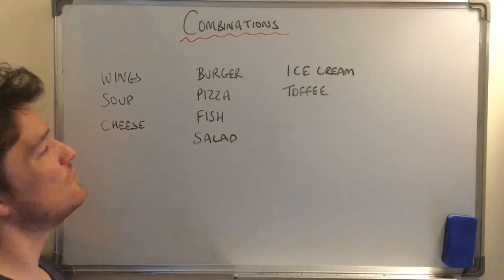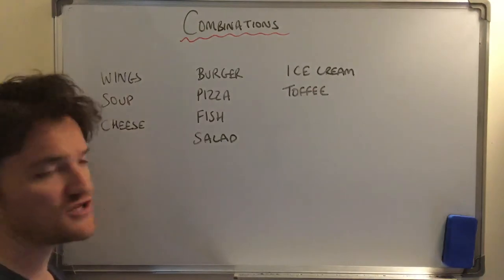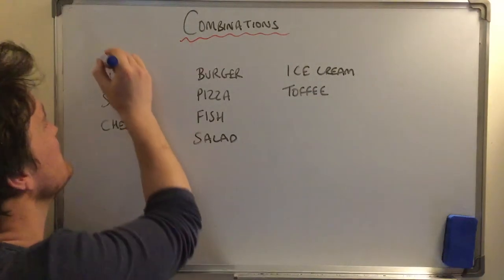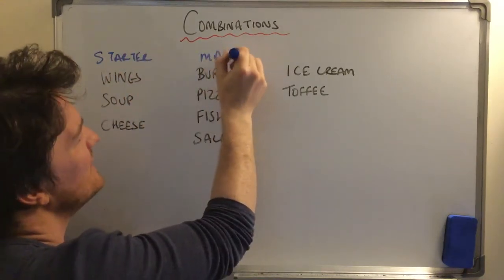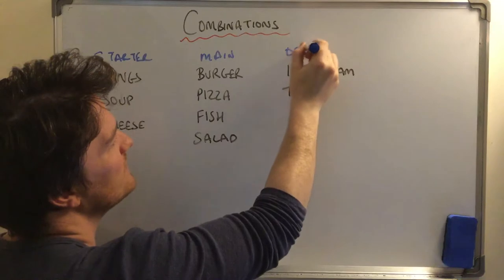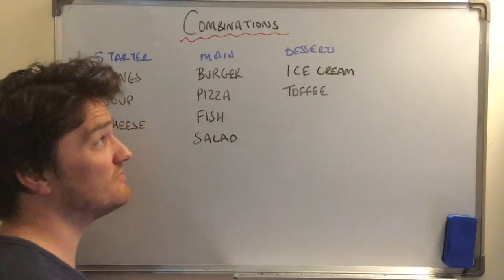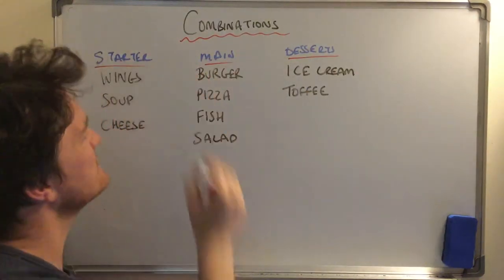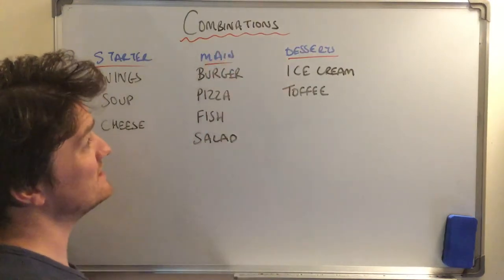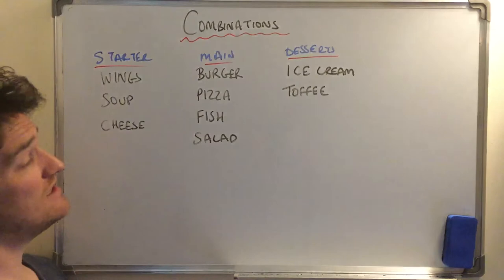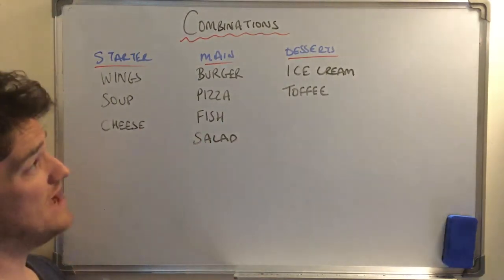What I have here is my new bistro that I've created — this is the restaurant I'm going to build. Over here I have my starters, then my mains, and then my desserts. I'm a chef trying to prep the day, working out all the possible meals someone could come in and order. Everyone's going to have a starter, main, and dessert — so how many choices do they have?